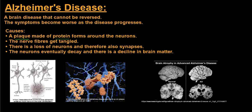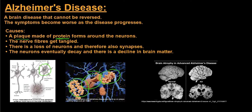The plaque that causes Alzheimer's is made up of proteins. As soon as this plaque starts to form around the neurons, a few things will happen. Firstly, nerve fibers in the cell body get tangled. There is a loss of neurons and therefore also synapses — you'll see a neuron disappearing and the synapses will also disappear, with a large entanglement occurring. And as these neurons get lost or decay, there will also be a decline in brain matter.